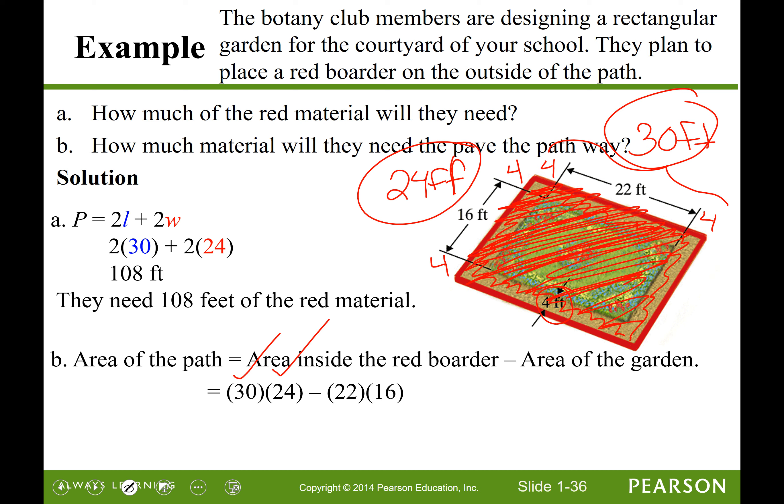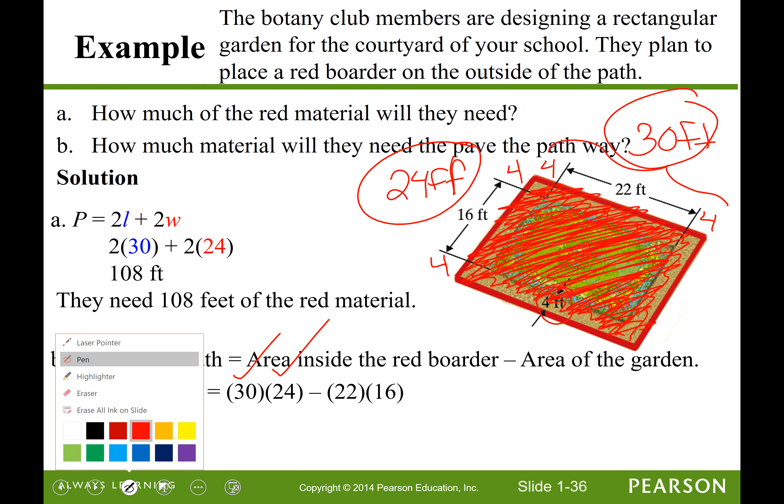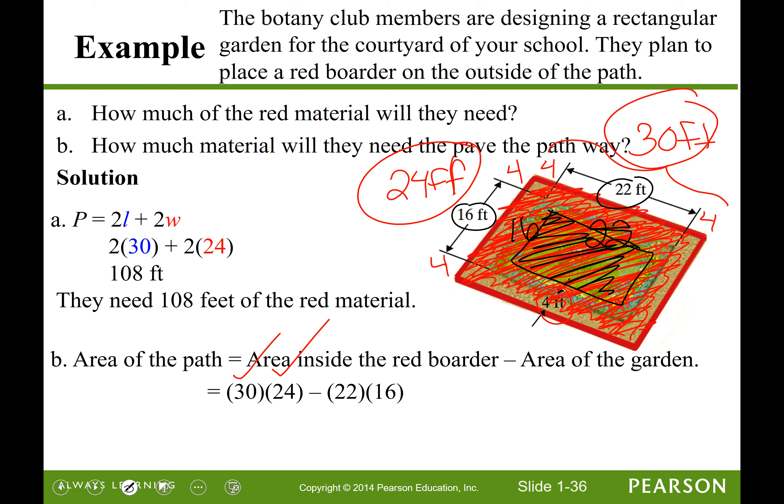So to do that, we're going to set up the area of the path as being the area inside the red border minus the area of the garden. The area inside the red border is 24 times 30. And so what this 30 times 24 calculates for us is the entire, everything on the inside. Everything that I'm shading here. So it's going to be too much, right? We don't need that much. So we do the 24 times the 30. But then we don't want to waste our money on extra material to pave the pathway. So now we're going to subtract out this inner part here. And that surface area, it's a rectangle and it is 16 by 22. And that gives us 368 and it's square feet this time.